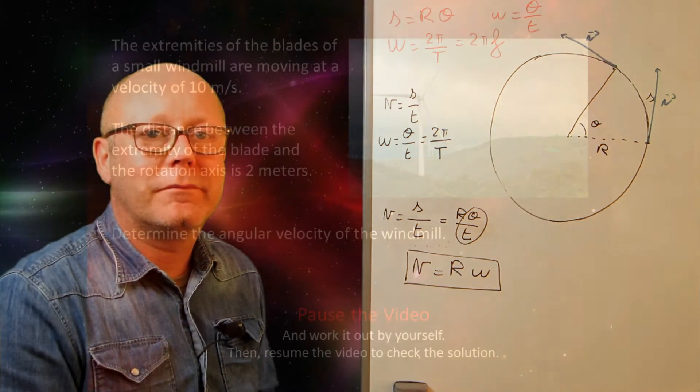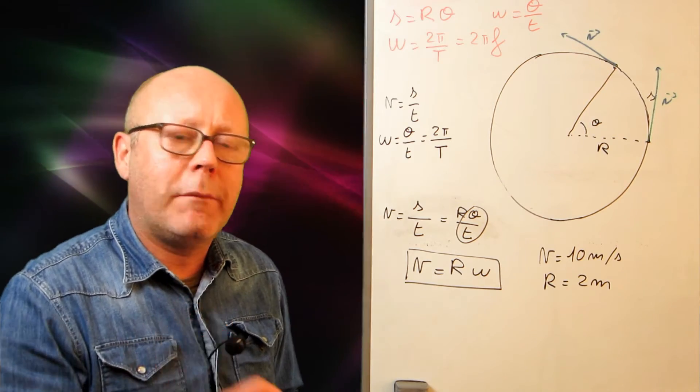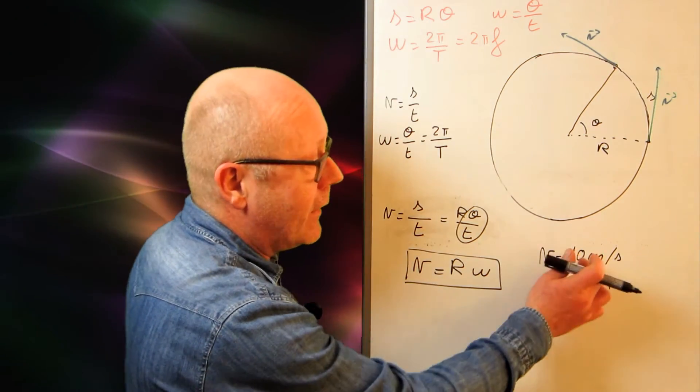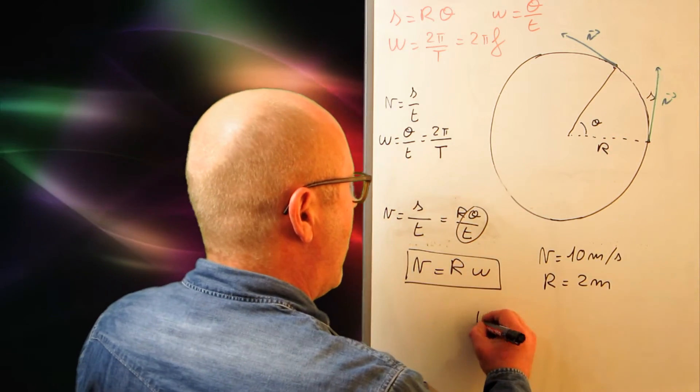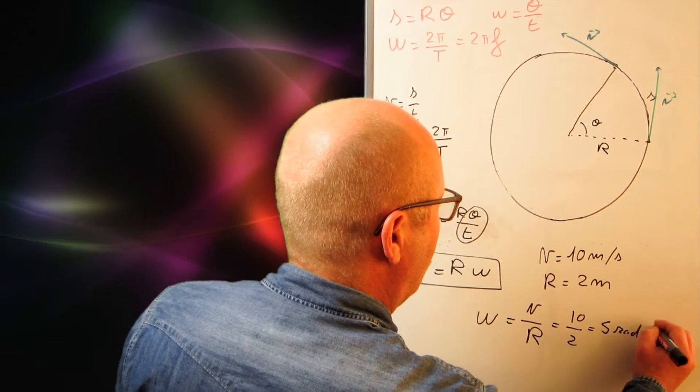An exercise. So I have the extremity of the blades of the windmill, which are having a speed of 10 meters per second. The radius of the circular motion described by the tip of the blade is 2 meters. I want to calculate the angular velocity. I just use a formula. Omega equals v on r. So 10 on 2, giving me 5 radians per second.